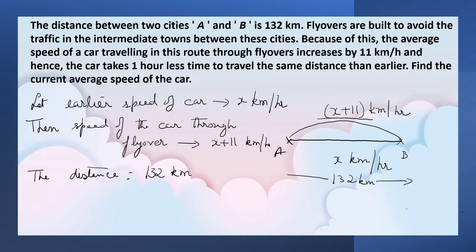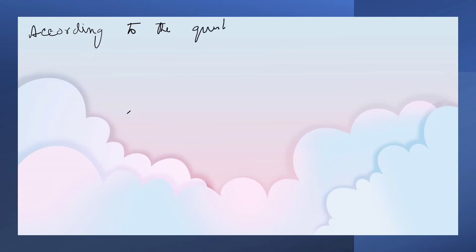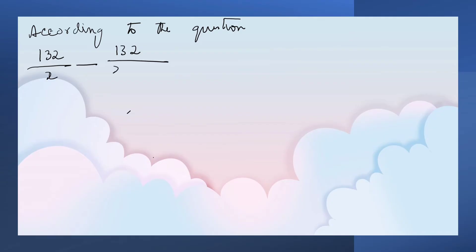According to the question, time taken by the car through the normal route minus time taken by the car through the flyover equals 1 hour. So, according to the question: 132 divided by x, minus 132 divided by (x plus 11), is equal to 1.